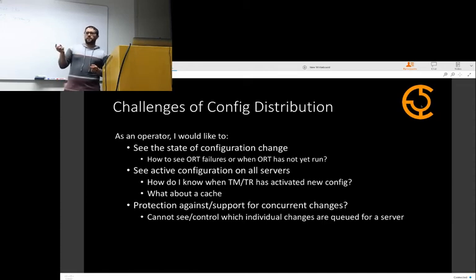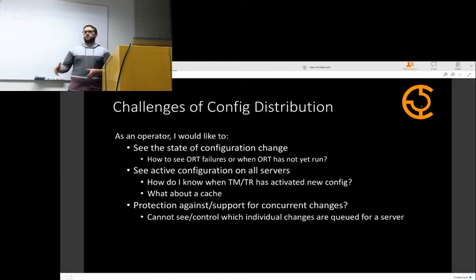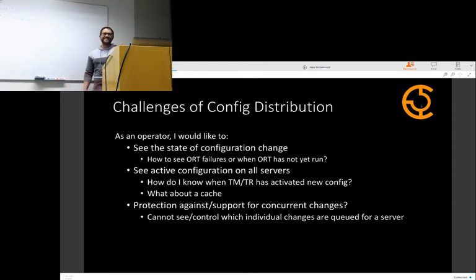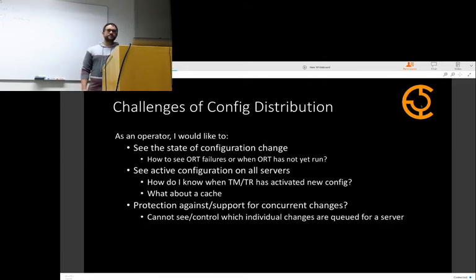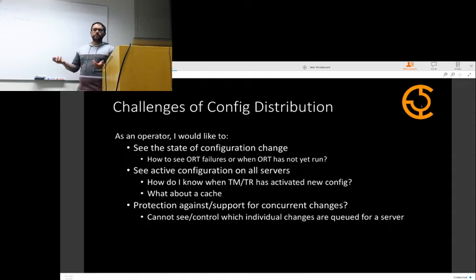We've seen some cases where even though the config files are on the cache, that's not necessarily what's running. If we're going to fix this, it would be good to fix it where we can actually see what's running on Traffic Server. The self-service plan we have doesn't do this yet. Timestamps will make it much easier. I think self-service will actually do a lot of it — it'll have to know what configs are on the caches and what's on the cache, and you'll just have to expose that.